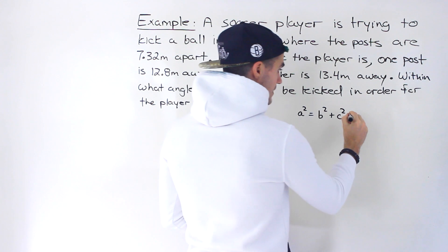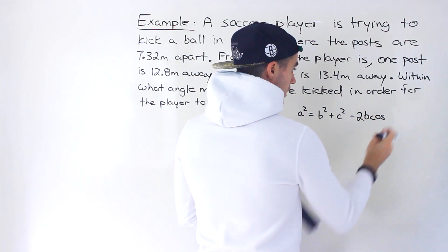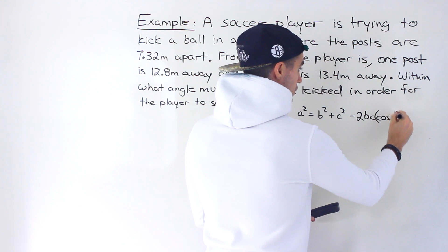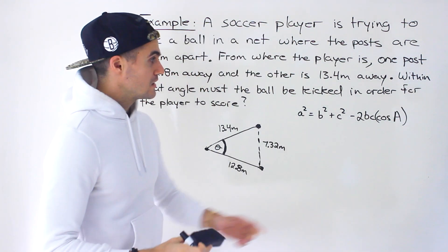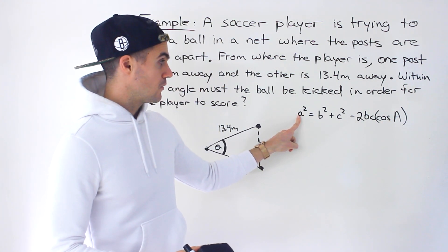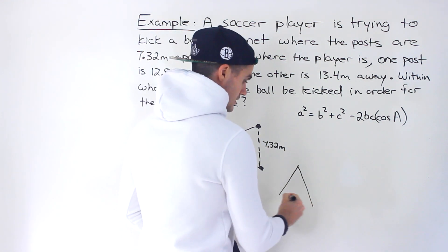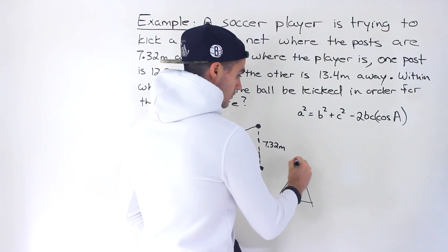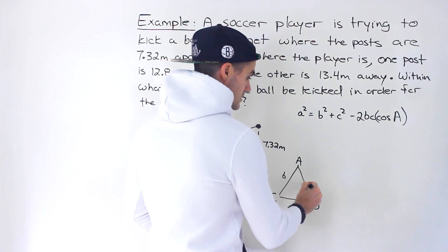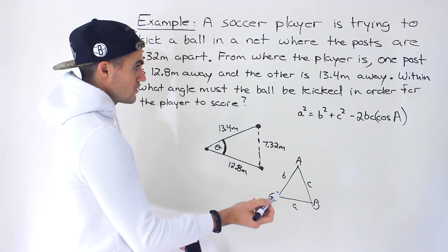Remember, the cosine law formula is: a² = b² + c² − 2bc·cos(A), where angle A is always opposite to side a. Thinking about the triangle: if this is angle A, angle B, and angle C, then the opposite sides are side a, side b, and side c respectively.